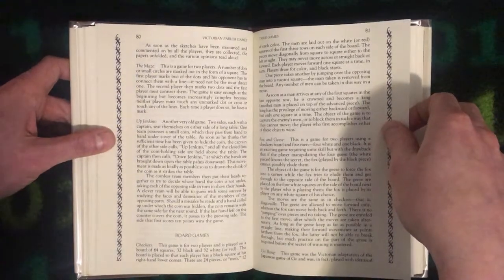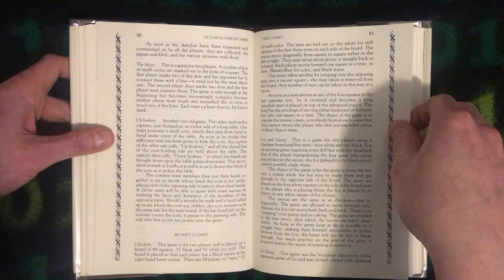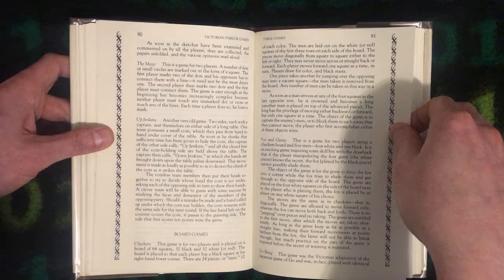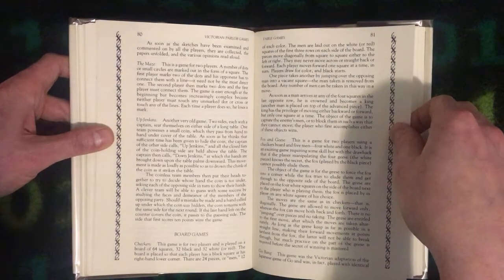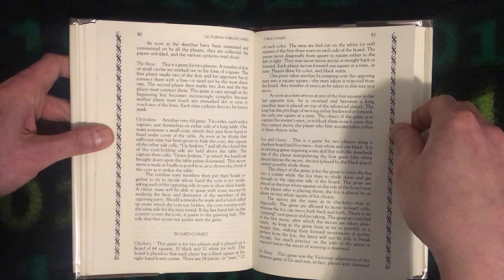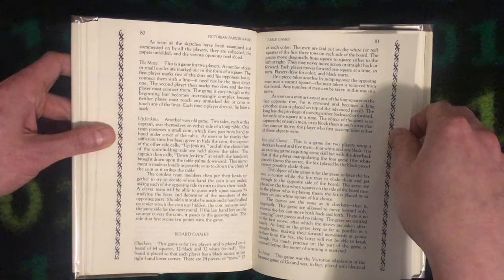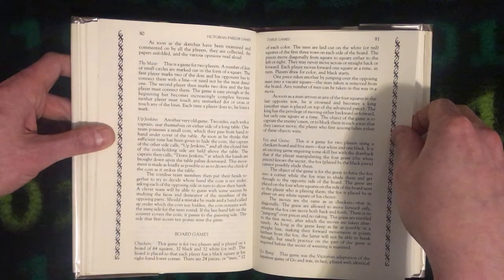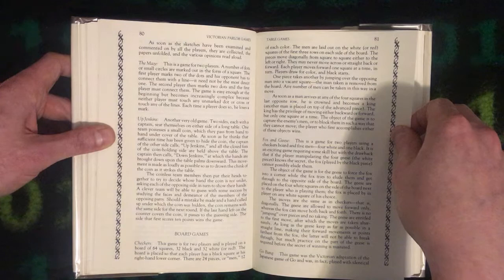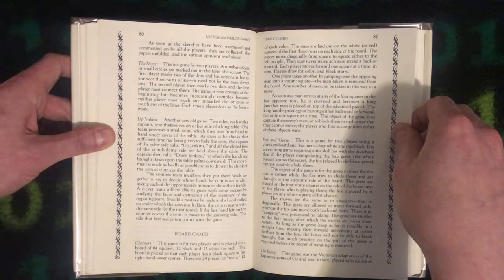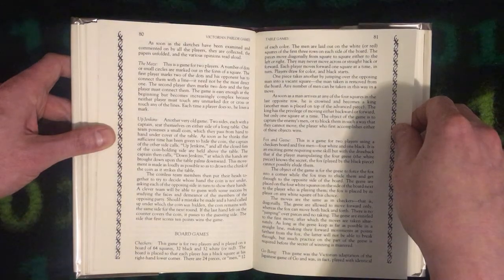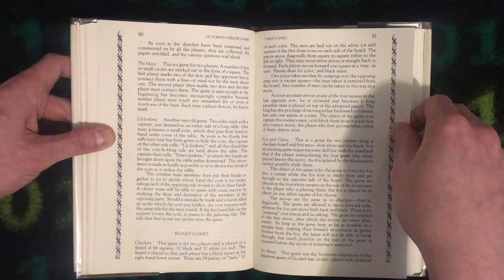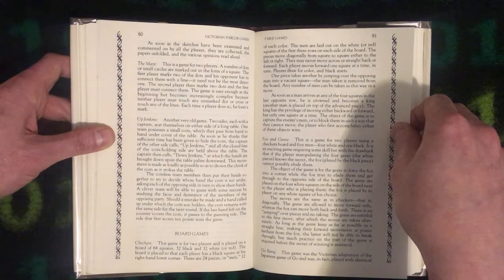Two sides, each with a captain, seat themselves on either side of a long table. One team possesses a small coin, which they pass from hand to hand under cover of the table. As soon as he thinks that sufficient time has been given to hide the coin, the captain of the other side calls up Jenkins, and all the closed fists of the coin holding side are held above the table. The captain then calls down Jenkins, at which the hands are brought down upon the table palms downward. This movement is made as loudly as possible so as to drown the chink of the coin as it strikes the table.